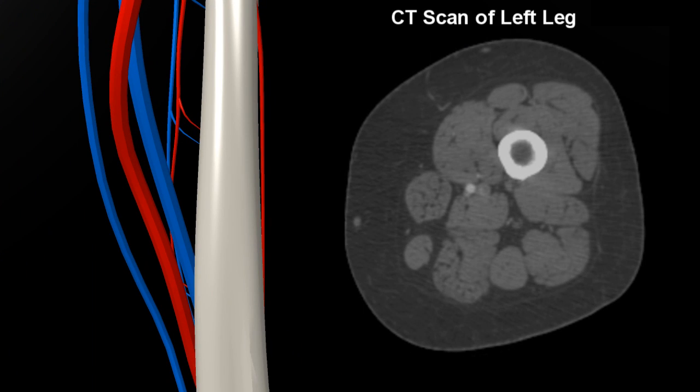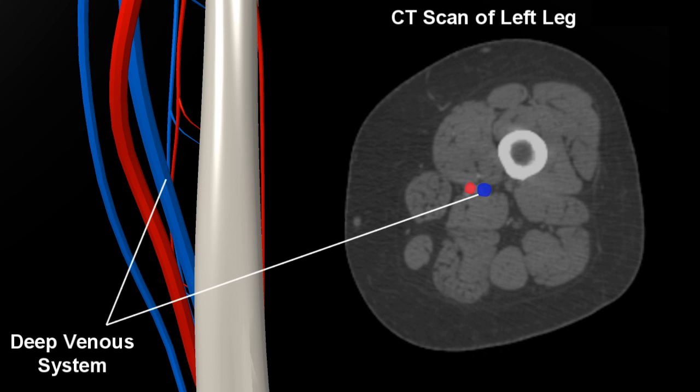This vessel is deep in the tissues, situated between the muscles and bone, and is referred to as the deep venous system.